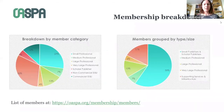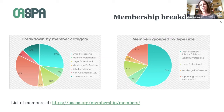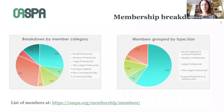Looking at our membership breakdown, the scholar publishers — those volunteer-led journals — actually make up the biggest membership category, and then the smallest professional publishers. Grouped together, they make up almost 60% of our members. The supporting services and infrastructure are the next largest group. So this is not just an organisation of professional and commercial publishers. And 75% of our publisher members are fully open access, and almost half of them don't charge any kind of fee.